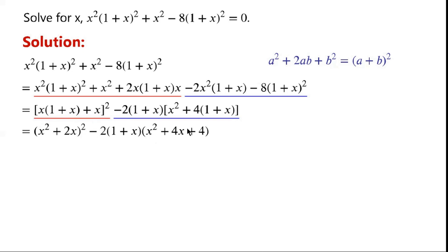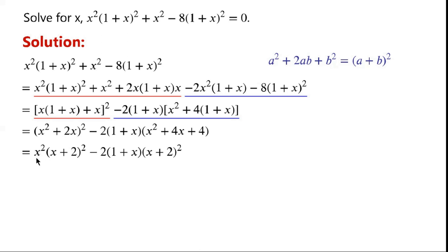4 times (1 plus x) is equal to 4x plus 4. x squared plus 2x, or squared, can be written as x squared times (x plus 2) or squared. x squared plus 4x plus 4 can be written as the perfect square (x plus 2) squared.